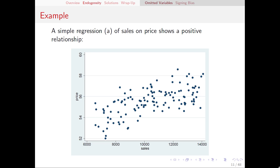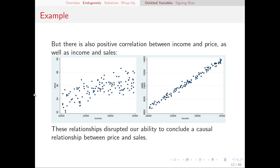Here I have a scatter plot of price and sales showing a positive relationship, just like we saw from our first regression. Of course this is misleading. Correlation and causality are not the same thing. So while higher prices tend to be associated with higher sales, the higher sales are not necessarily because of the price. There could be something else going on. In this scatter plot on the left I have price and income showing that higher prices tend to be associated with higher incomes, and on the right we have a scatter plot of sales and income showing that higher incomes are associated with higher sales.